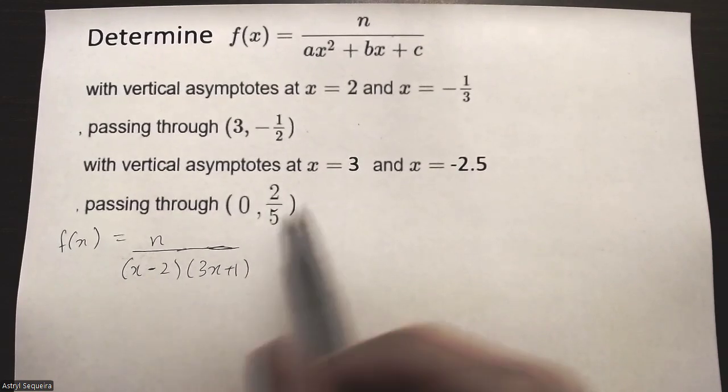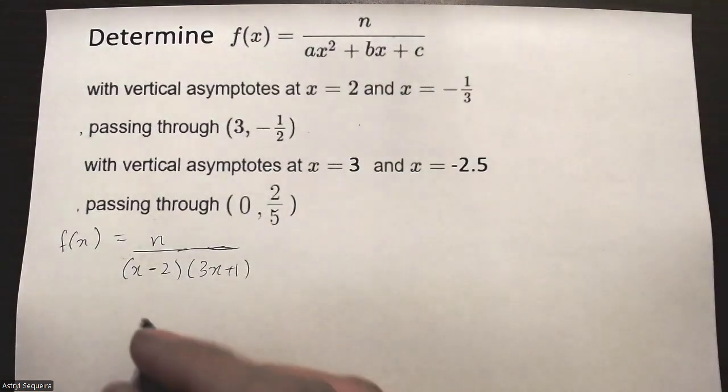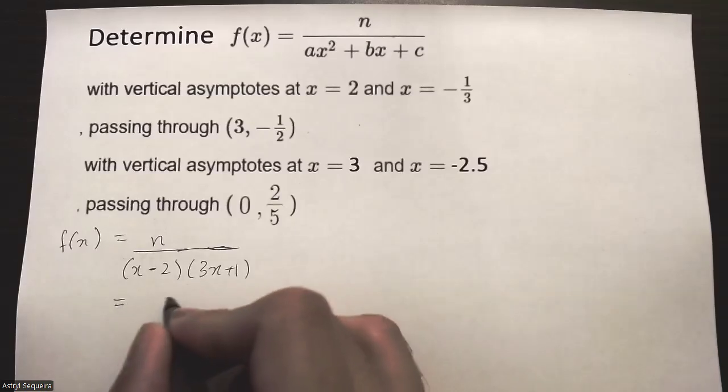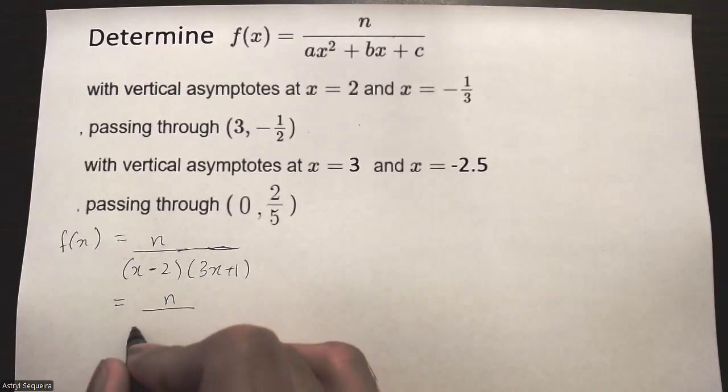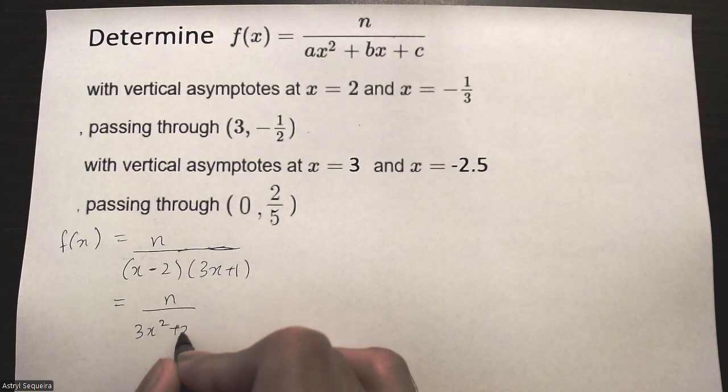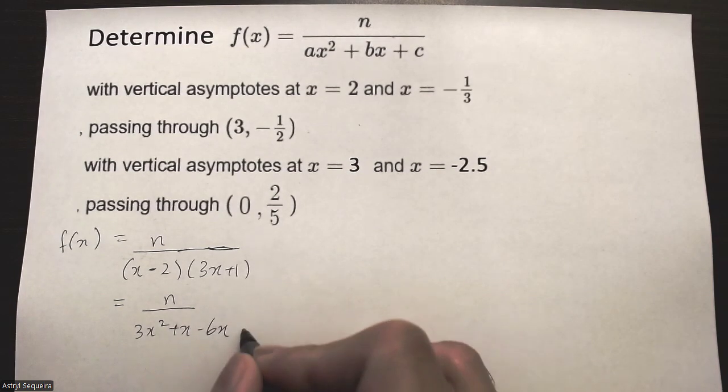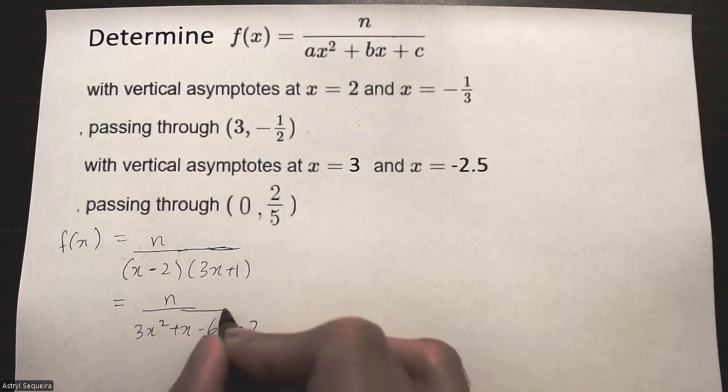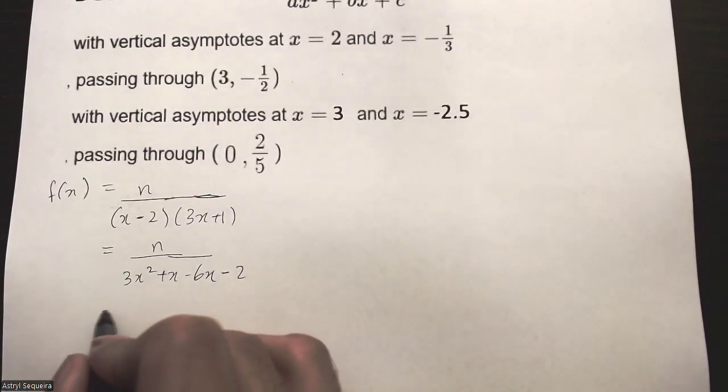Then I'm going to expand the bottom because they want the bottom in standard form. That's going to be n over 3x squared plus x minus 6x minus 2, and then I'll combine like terms over there.